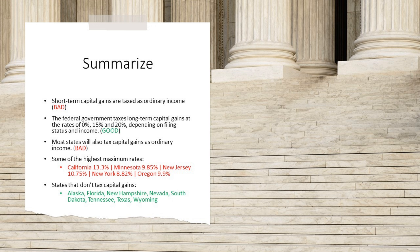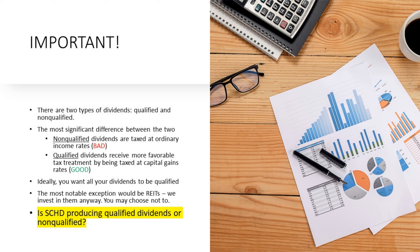It's very important to think about the types of dividends in terms of these two methods of taxation. There are two types of ordinary dividends: qualified and non-qualified. The most significant difference is that non-qualified dividends are taxed at ordinary income rates — that's bad — while qualified dividends receive more favorable treatment by being taxed at capital gains rates. Ideally, you want all your dividends to be qualified. A large majority of dividend-paying stocks in the S&P 500 pay qualified dividends. The most notable exception is REITs, which is why previous videos showed that many dividend ETF indices exclude REITs for that reason.